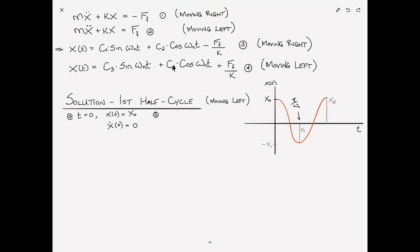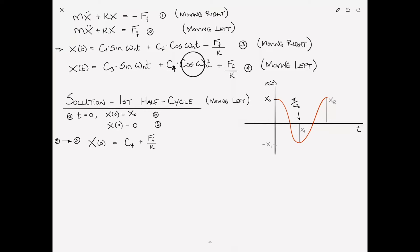Our initial conditions at time zero: displacement X(0) equals X sub zero (equation five), velocity X dot(0) equals zero (equation six). Substituting these into equation four gives X(0) equals C4 plus F sub F over K, which equals X sub zero. Solving for C4: C4 equals X sub zero minus F sub F over K — equation seven.